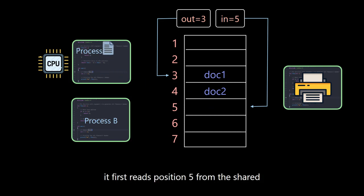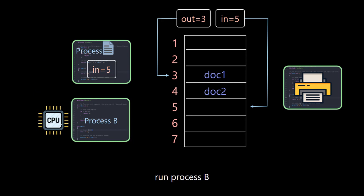Therefore, it first reads position 5 from the shared global variable in. At this time, the CPU thinks that process A has been running long enough. Instead, run process B.